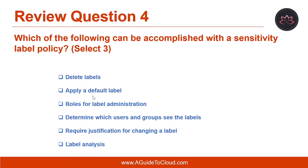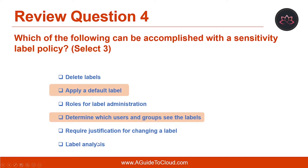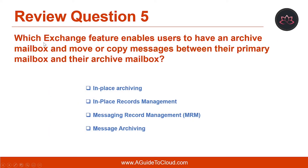Question number four: which of the following can be accomplished with a sensitivity label policy? The right answers are: apply a default label, determine which users and groups see the labels, and require justification for changing a label.